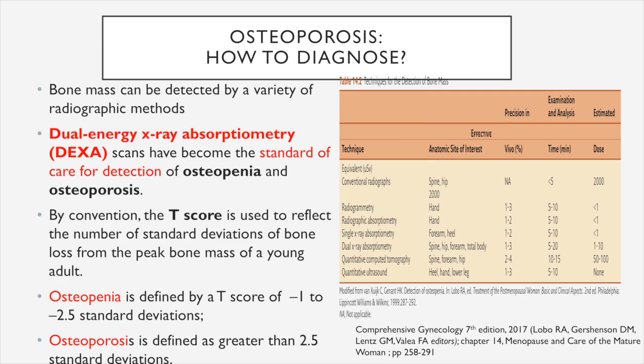How do we diagnose osteoporosis? Bone mass can be detected by a variety of radiographic methods, but the dual-energy X-ray absorptiometry scan, or DEXA scan, has become the standard of care for the detection of osteopenia and osteoporosis. By convention, we use the T-score to reflect the number of standard deviations of bone loss from the peak bone mass of a young adult. Osteopenia is defined as a T-score of negative 1 to negative 2.5 standard deviations, and osteoporosis is defined as greater than negative 2.5 standard deviations.